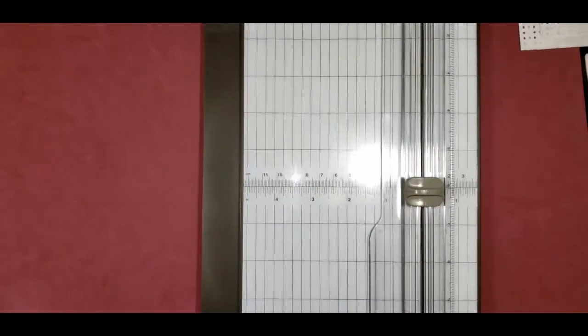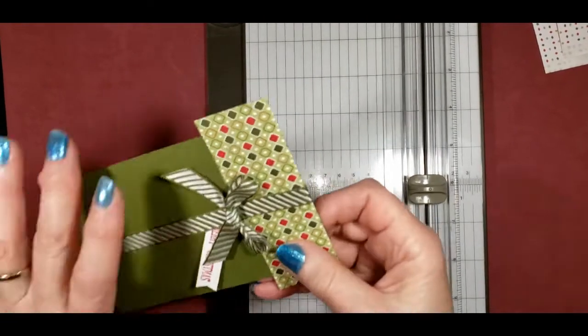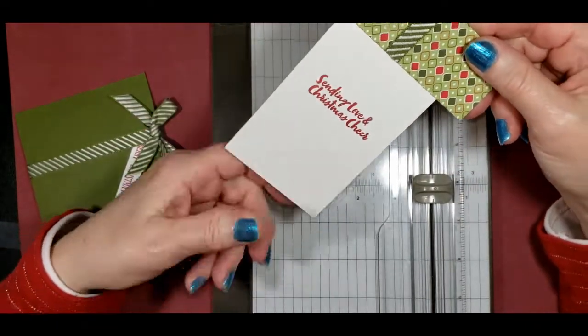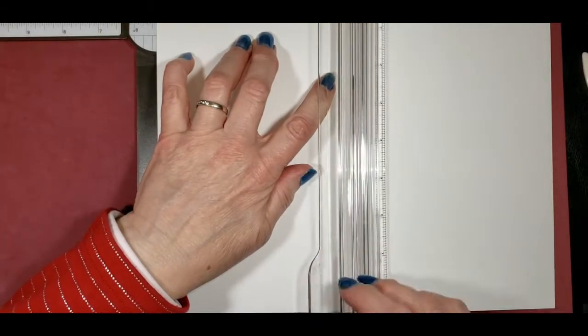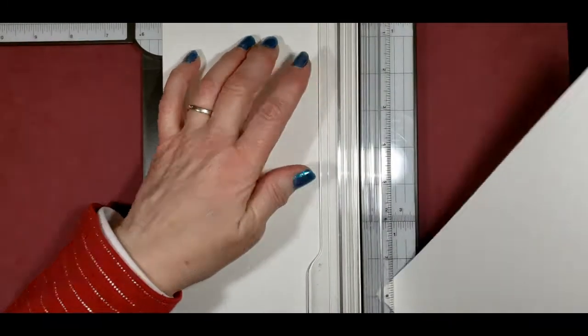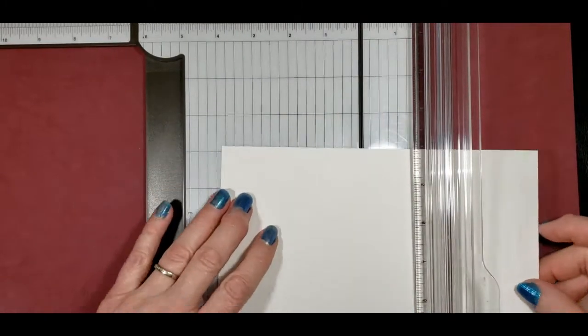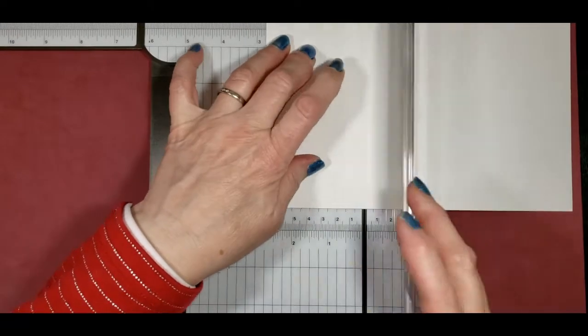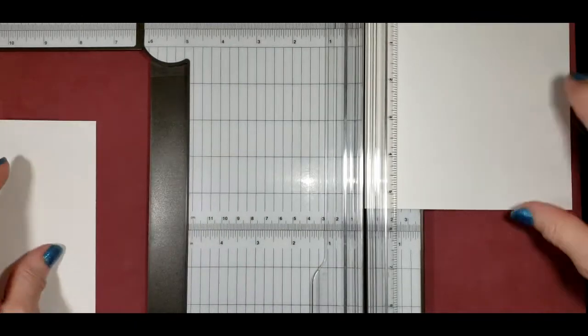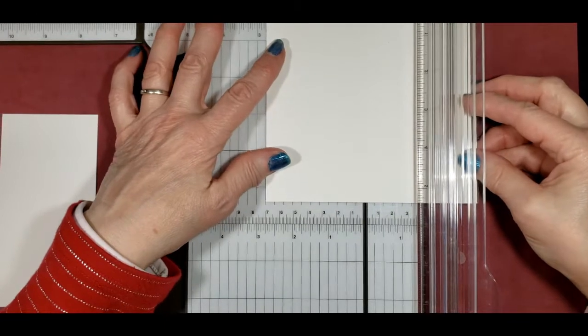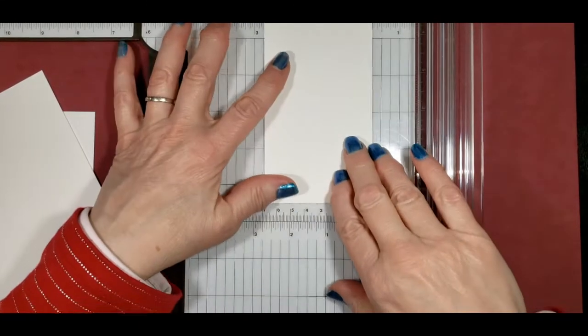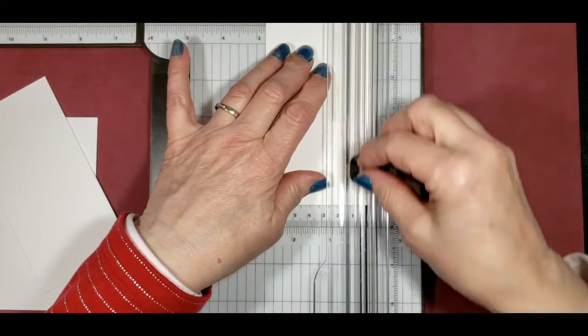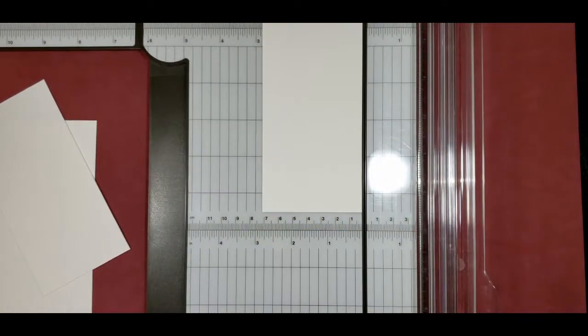One more thing that we need to cut out is our inner piece. I'm going to make that with basic white thick cardstock so it'll hold up going in and out of the card. So this is the thick cardstock and we need to cut it at five and three eighths. Then we'll cut this at two and three quarters. And now I think we're done with our trimmer. So let's pack that up.